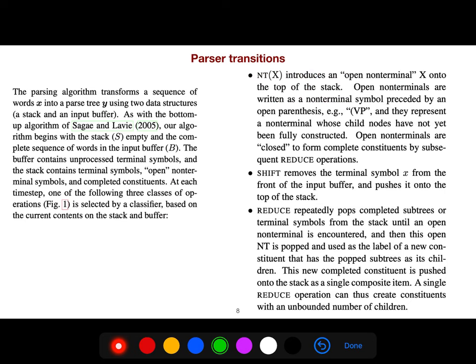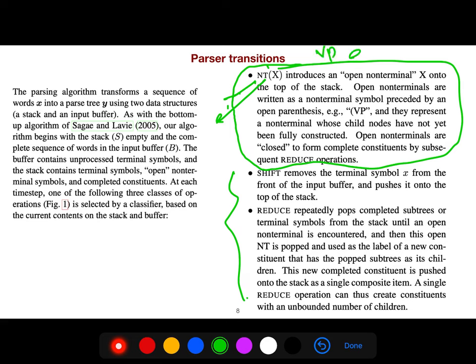And so, there are parser transitions. You know these shift-reduce. I don't repeat it. But we have one more action, which is NT of X. NT of X introduces an open non-terminal. Non-terminal. Open non-terminal X. For example, you say verb phrase and then something.